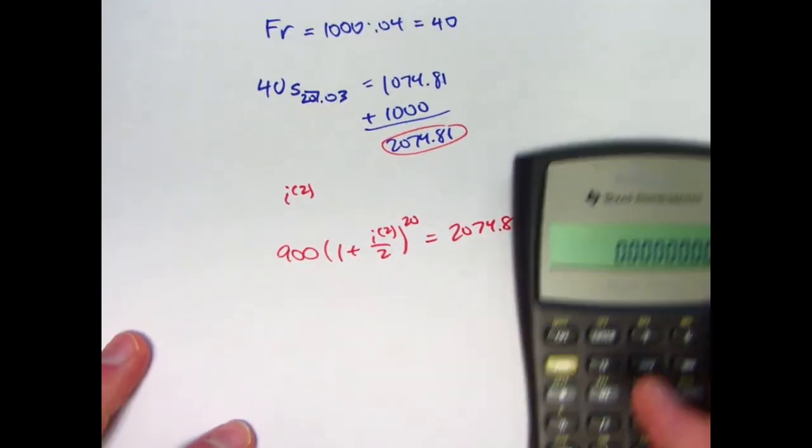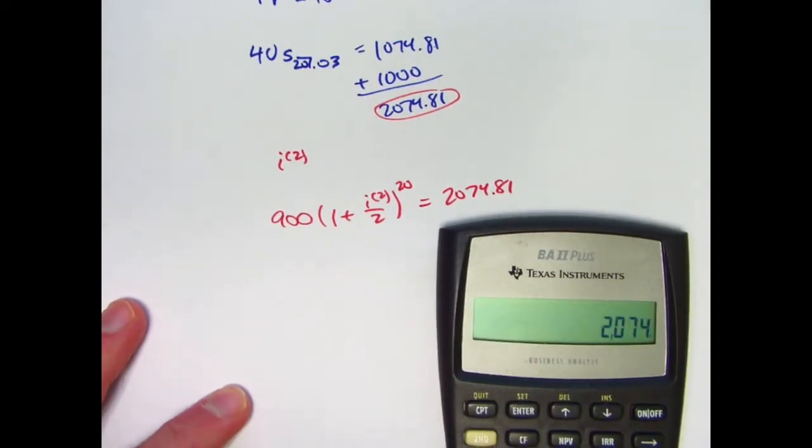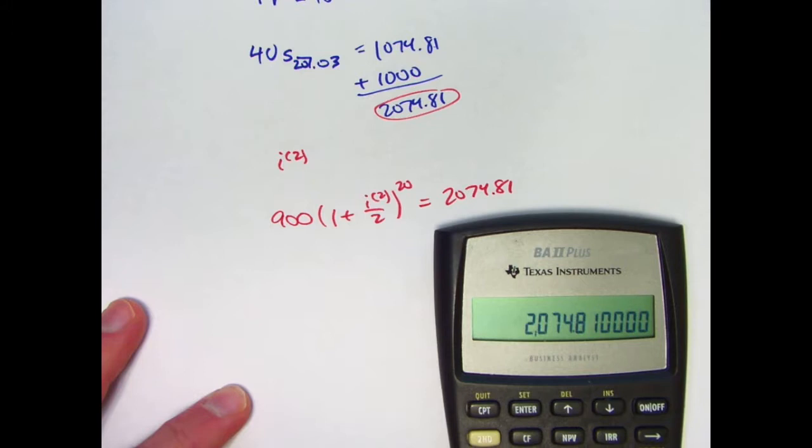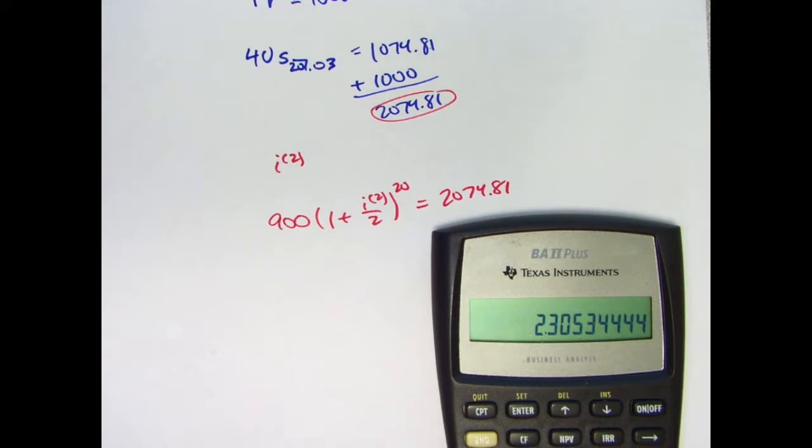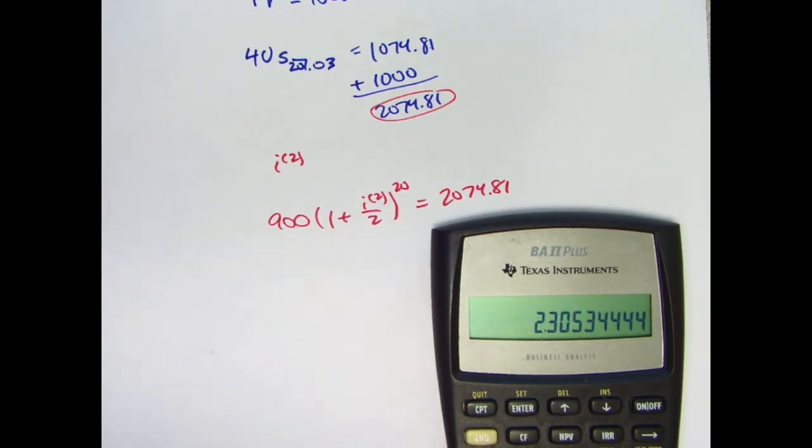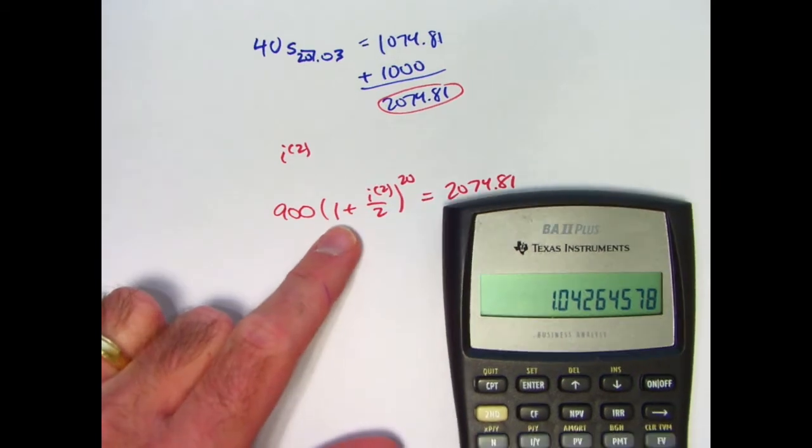Let's just solve this now with a calculator. 2074.81 divide by 900. I guess I'm not using more decimal places. Maybe I should have. Oh, well. Divide by 900 to get this. Raise both sides to the 1/20th power, which is 0.05 power. 0.05 power to get this. I'll need to subtract 1 then and multiply by 2.